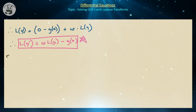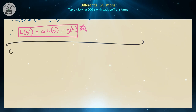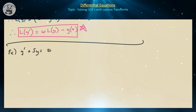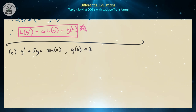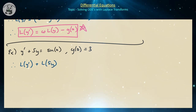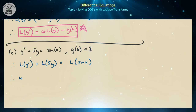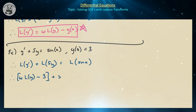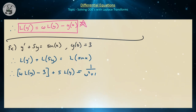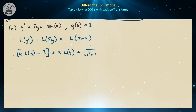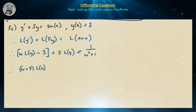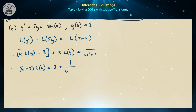Bringing back our example — y prime plus 5y equals sine of x with y of 0 equals 3 — we take the Laplace transform of both sides. The Laplace transform of y prime is omega times L{y} minus 3, plus 5 times L{y}, all equaling the Laplace transform of sine of x, which is 1 over omega squared plus 1.